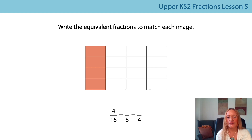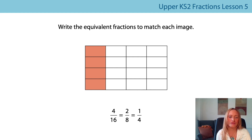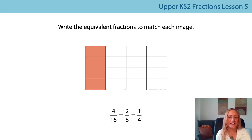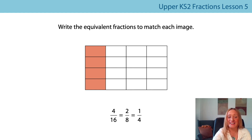What about this one? So four sixteenths is equivalent to two eighths, which is equivalent to a quarter or a fourth. One quarter is the same proportion of the whole shape as four sixteenths and two eighths. Has the scale factor changed this time? The scale factor is now four — so the numerator in each of those fractions has been scaled by the same factor of four.